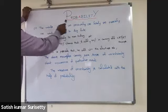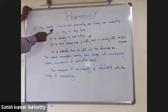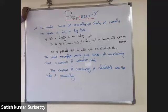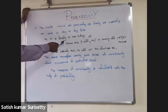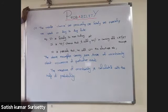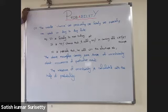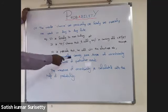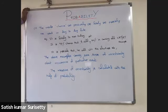Words like probability, chance, probably, likely, and possibly are used in day-to-day life. For example, it is likely to rain today; there is a 99 percent chance I will score 100 percent in the coming exam; it is possible that he will win the elections. These examples convey some sense of uncertainty about the occurrence of a particular event.